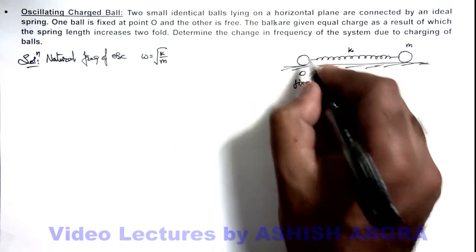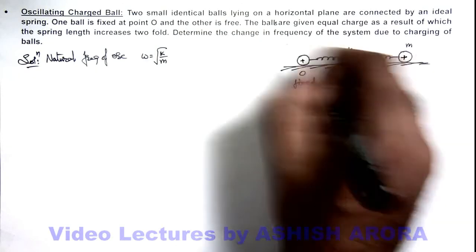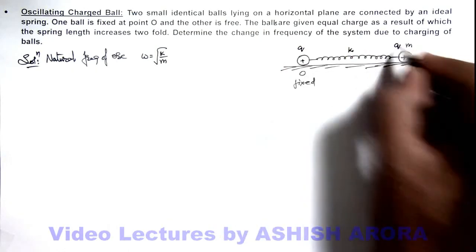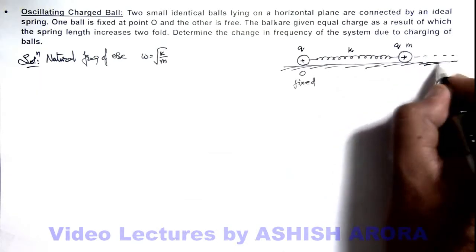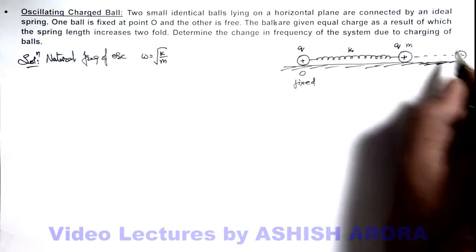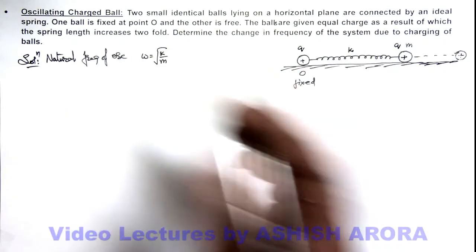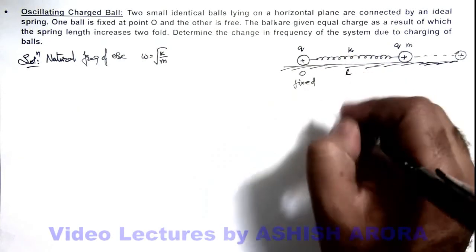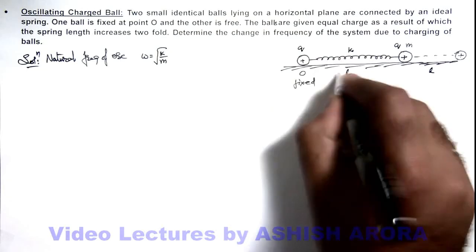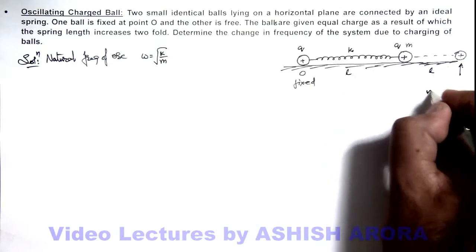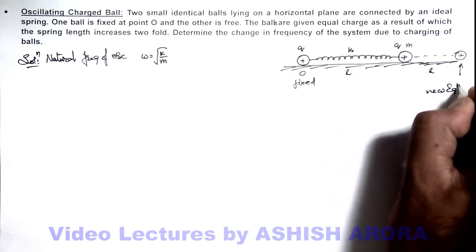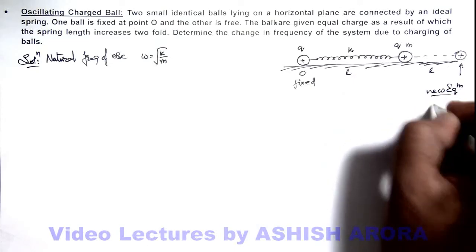If we charge the two balls with equal charges q and q, then due to repulsion the equilibrium position shifts away from the natural length. And we are given that the spring length increases twofold. If its natural length is l, it'll change to 2l. And this will be the new equilibrium position as per the situation given in the problem.